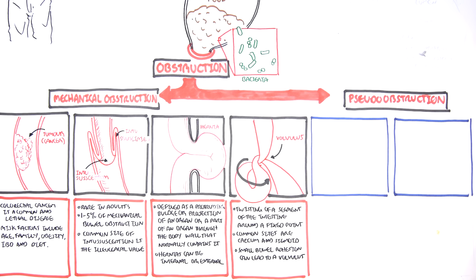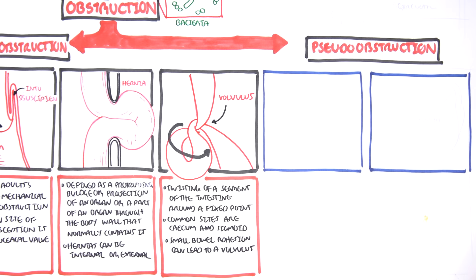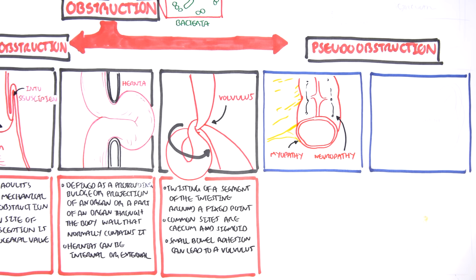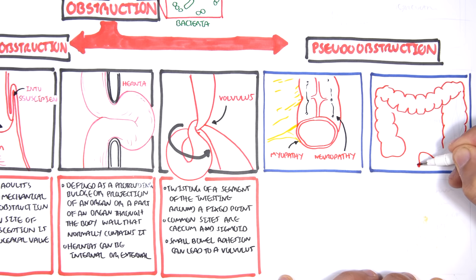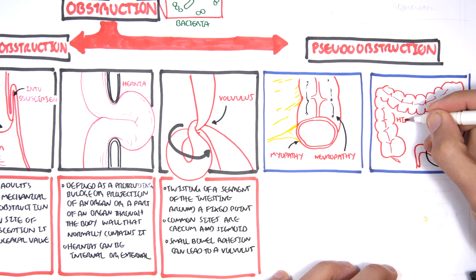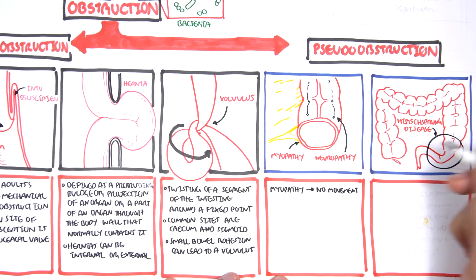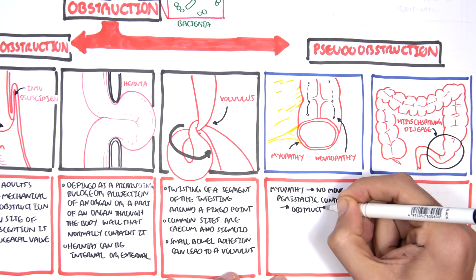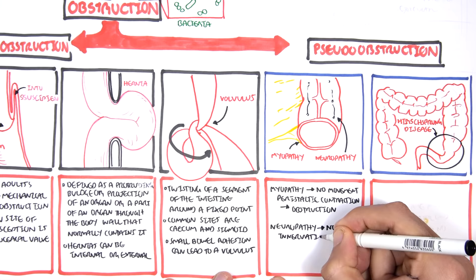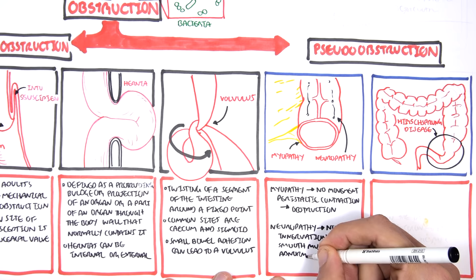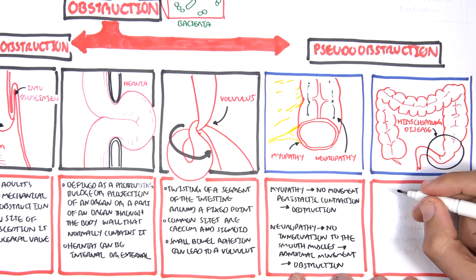Now let's look at pseudo obstruction. Pseudo obstruction, as the name implies, is a false obstruction, but regardless it does result in obstruction of the bowel. The main examples are myopathy — problems with the muscle — and neuropathy — problems with the innervation of the bowel. A myopathy results in no peristaltic contractions, so food doesn't move through, causing obstruction. A neuropathy means no innervation of the smooth muscles, resulting in abnormal movement and thus obstruction.